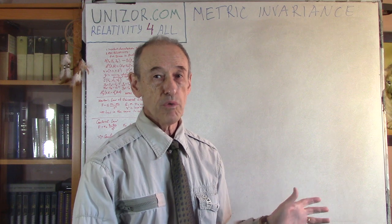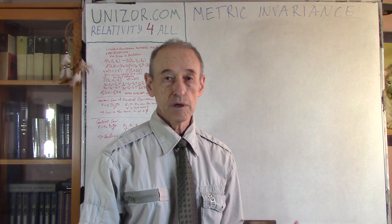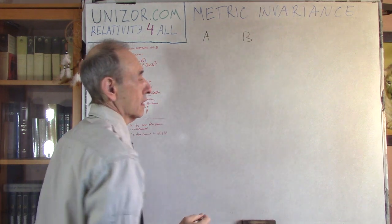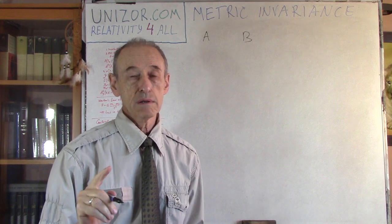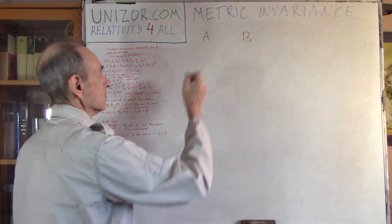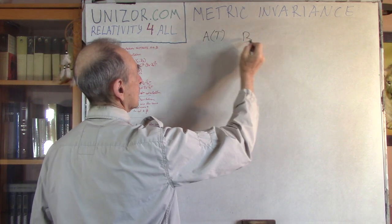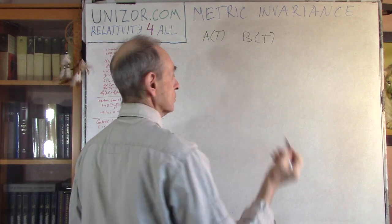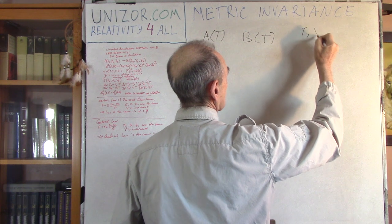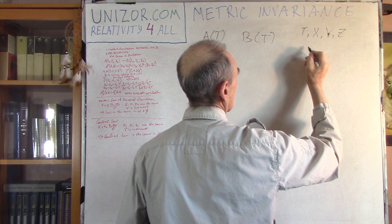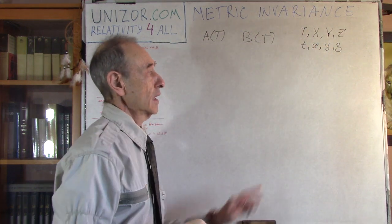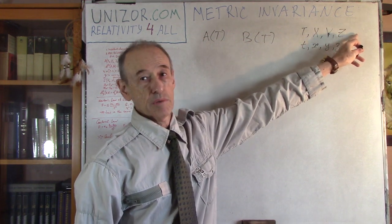That basically means we can use the formula for distance between two points in the Cartesian system. If you have two points, point A and point B — it doesn't really matter whether they are stationary or moving. We have two reference frames: one with coordinates T, X, Y, Z and another with coordinates t, x, y, z. We're assuming this second frame is moving relative to the first uniformly.